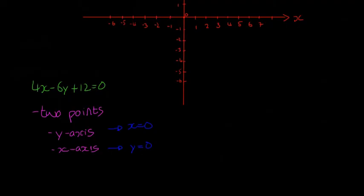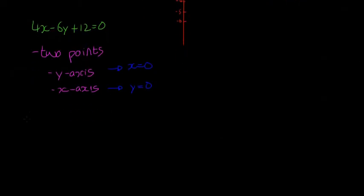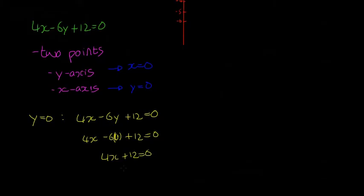So first, y is equal to 0. So that means we have 4x minus 6y plus 12 is equal to 0. If y is equal to 0, we have 4x minus 6 multiplied by 0 plus 12 is equal to 0. So then 4x plus 12 is equal to 0. 4x is equal to minus 12. And x is equal to minus 3.